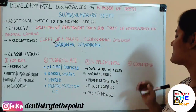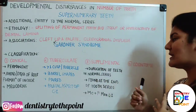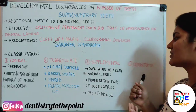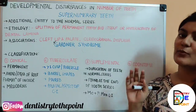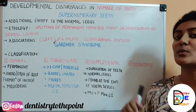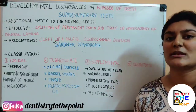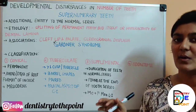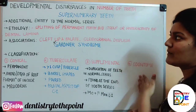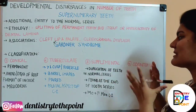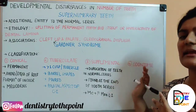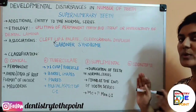The fourth type is odontoma. However, this classification is not accepted worldwide because the term odontoma refers to a tumor of odontogenic origin, which has no real connection to supernumerary teeth. It is mentioned here only because it appears in the textbook.